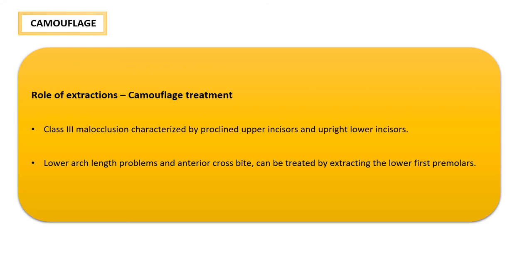If the opportunity for early treatment is missed, extractions can be utilized to treat these patients by camouflage. For a Class 3 malocclusion characterized by proclined upper incisors and upright lower molars, premolar extractions can provide better functional occlusion and aesthetics. If there are lower arch crowding problems and anterior crossbite, a lower first premolar extraction can be performed to give the patient a better occlusion.